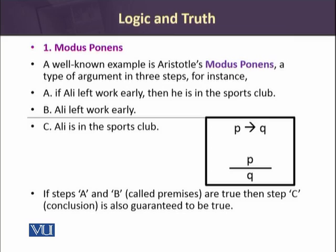I'll give you an example of logic and truth. This is one of the popular forms of traditional logic from Aristotle, named in logic Modus Ponens. In Modus Ponens, an argument is presented in three instances and we reach a conclusion. At the first step we have a premise: 'If Ali left work early, then he is in the sports club.' This proposes a condition — if something happens, then another thing would happen.